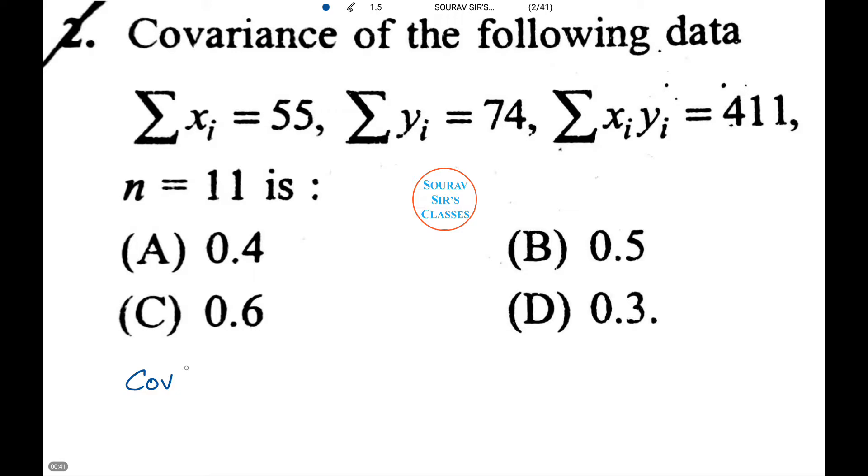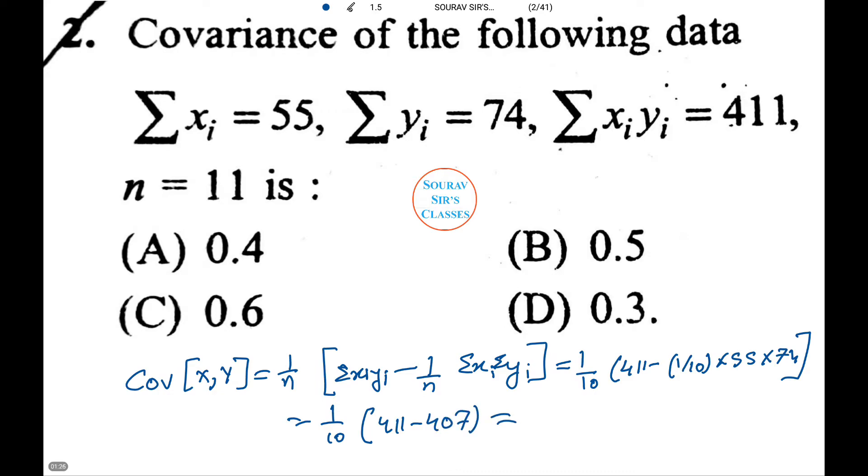Now according to formula, covariance X comma Y equals 1 by N summation XiYi minus 1 by N summation X summation Yi. Now putting in the values we have 1 by 10 into 411 minus 1 by 10 into 55 into 74, or 1 by 10 into 411 minus 407, and that upon calculation comes to 0.4. That is option number A.